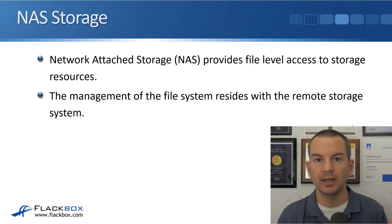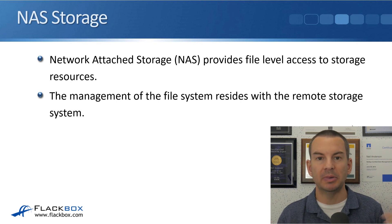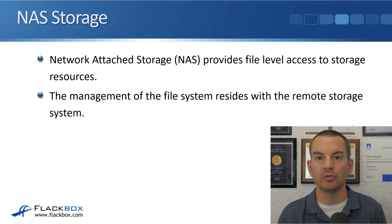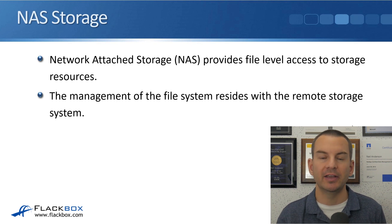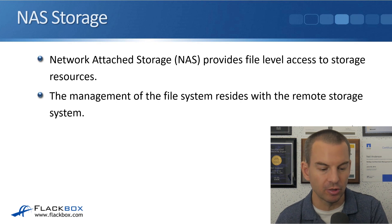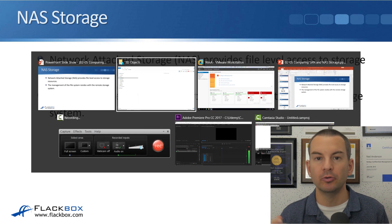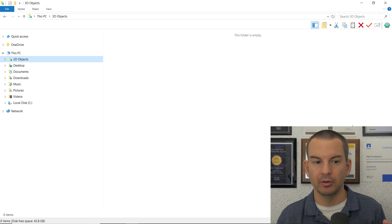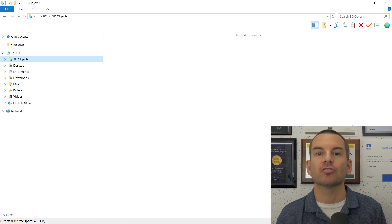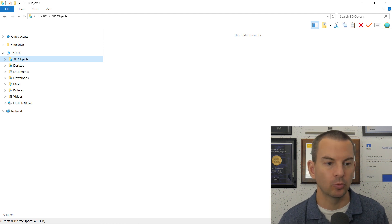A really common scenario with NAS you've probably seen before is when you're using your PC at work, running Windows, and you're probably used to accessing Windows file servers. Let's have a look at how that works — that is an example of NAS. You are getting file-level access to the storage. I have already set up a Windows file share on my storage system, and I'm going to connect to it from my client here, just like connecting to NAS storage from your PC at work.